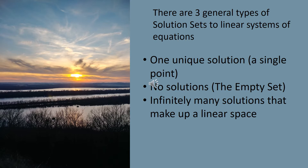For a linear system, it is not possible to have two exact solutions or three exact solutions. You either have one unique solution, no solutions, or you have infinitely many solutions because they lie on a line, a plane, or some higher-dimension space.